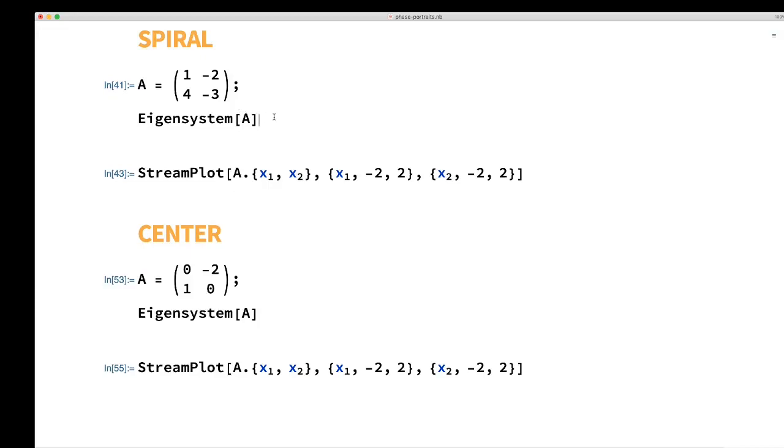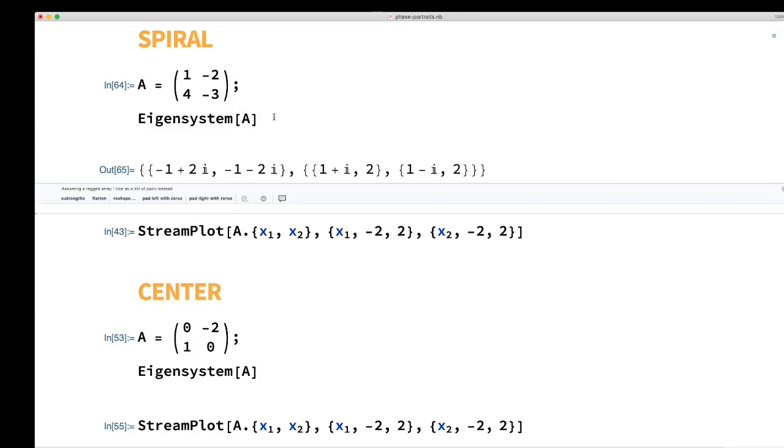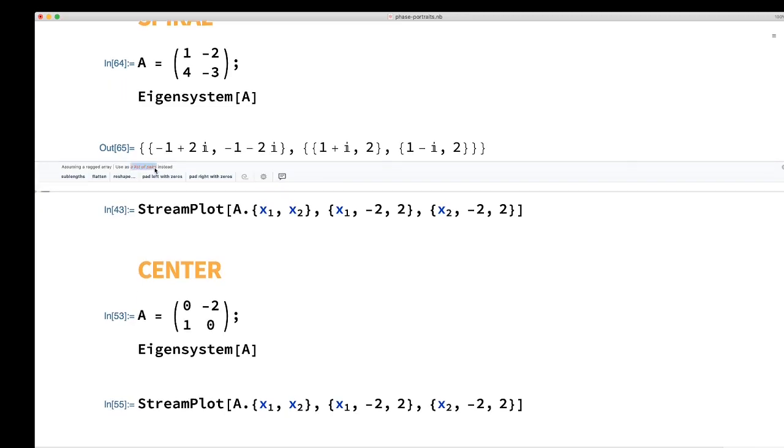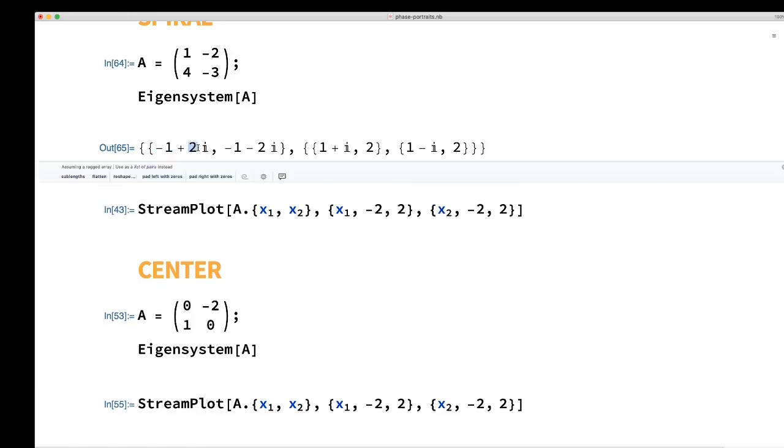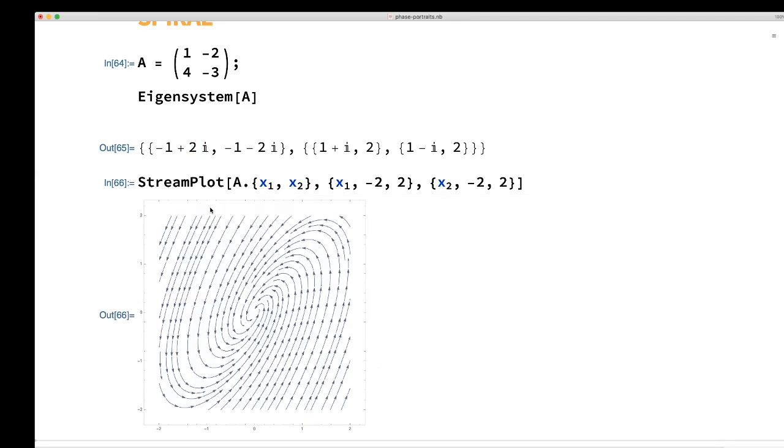When we have complex eigenvalues, that's always going to be a conjugate pair. So the real part tells us that the magnitude will decay, so it'll be an inward spiral and the thing will be stable. The imaginary part tells us how fast the spiral goes around.